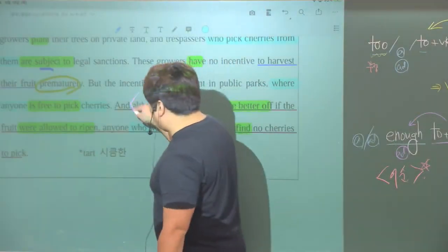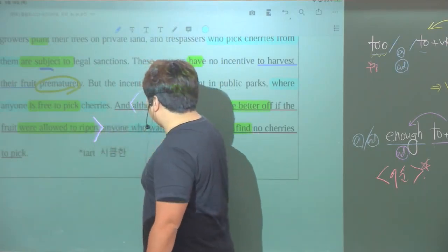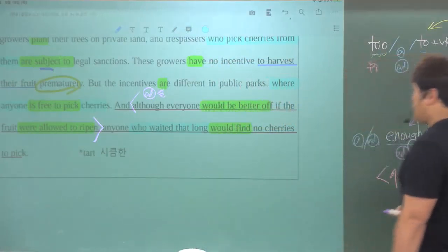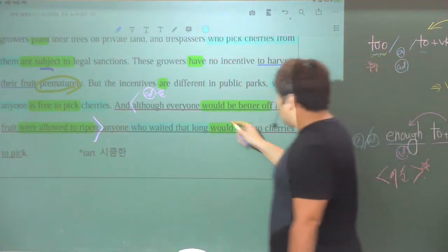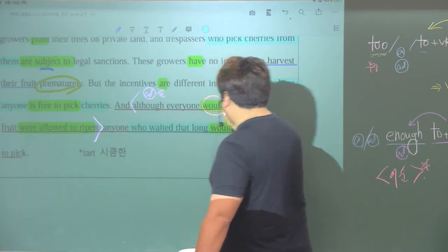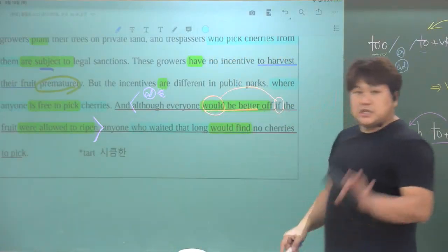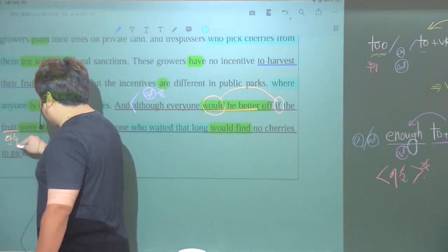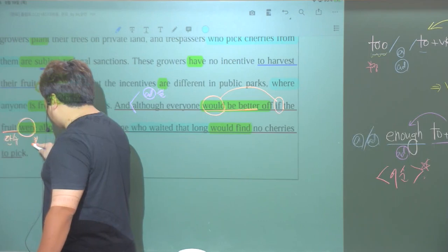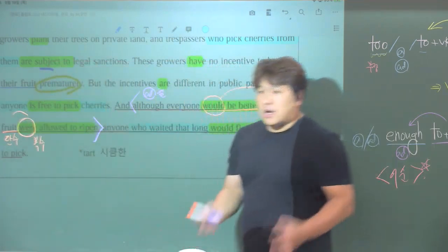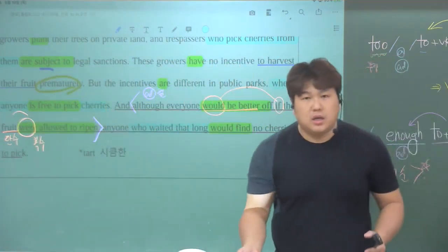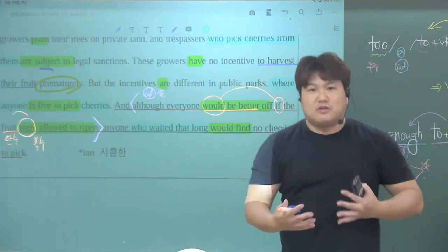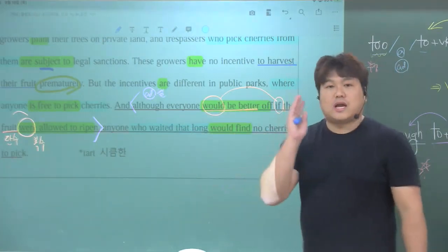일단 이 문장은 'although'부터 여기까지가 부사절로 출발하고 있습니다. '비록'이라고 출발하는 문장입니다. 두 번째, 모든 사람은 더 좋아질 것이다. 여기 나와 있는 'would'하고 'if'는 우연의 일치가 아니죠. 'if' 다음에 과일이 단수고요. 'were'라는 녀석도 복수인데 둘이 맞지 않아요. 왜? 안 맞으라는 겁니다. 왜? 사실이 아니거든. 거짓말이거든. 거짓말이라는 근거를 남겨두는 거야. 시제 왜곡 - 가정법이죠.